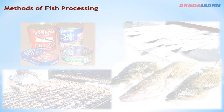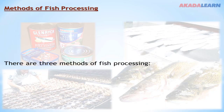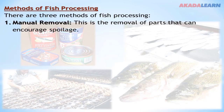There are basically three methods of fish processing. We have the manual removal, which is the removal of parts that can encourage spoilage. Filleting is the removal of bones and other unwanted parts. Then we have freezing, which is the process of subjecting the fish carcass to cold freezing.